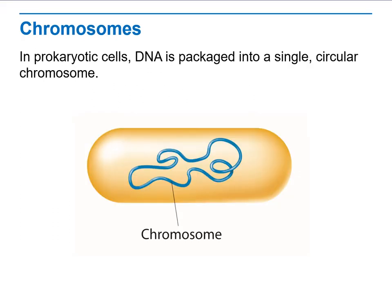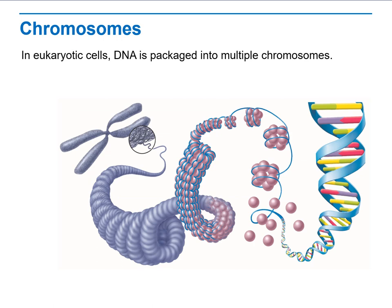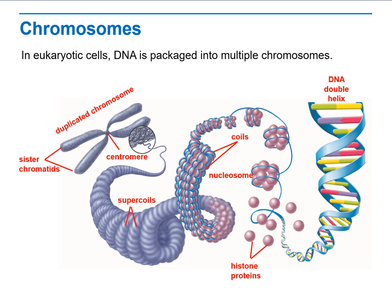We start with prokaryotic cells having one DNA as a single circular DNA with a plasmid inside. In eukaryotic cells, it's a complicated process called DNA condensation, where the DNA starts as two strands, using histone protein to become coiled and then supercoiled to become two sister chromatids bound together with a centromere — which is what we call chromosomes. As you can see, this is a double helix DNA, and the histone proteins bind with the nucleosomes, then start coiling and supercoiling until we reach the end product: duplicated chromosomes with two sister chromatids and a centromere.